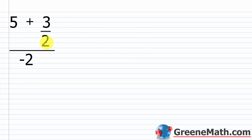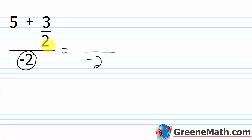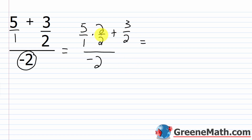Let's take a look at 5 plus 3/2 over negative 2. We're going to simplify the numerator and denominator separately. The denominator is already simplified, so I can just copy that. For the numerator, if I have 5 plus 3/2, I need a common denominator. I can write 5 as 5/1, and the least common denominator is 2. So I take 5/1 and multiply it by 2/2, then add 3/2. So 5 times 2 is 10, giving me 10/2 plus 3/2, and the denominator of the complex fraction is negative 2.